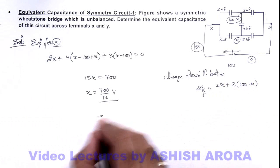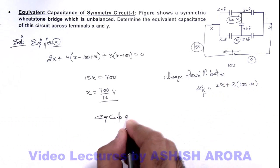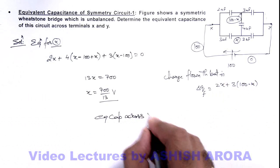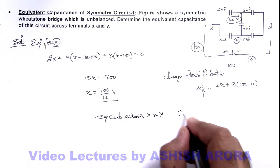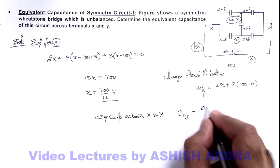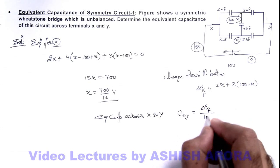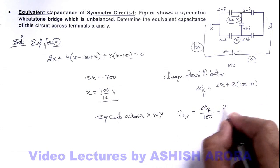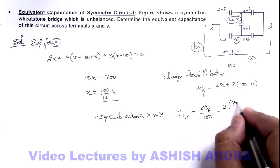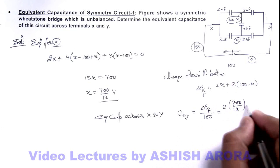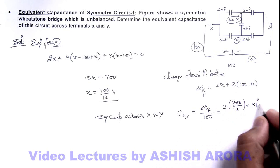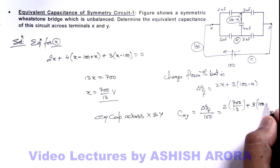So finally the equivalent capacitance across x and y can be given as Cxy is equal to delta q f divided by hundred. So this is 2 multiplied by 700 by 13 plus 3 multiplied by hundred minus 700 by 13, divided by hundred.